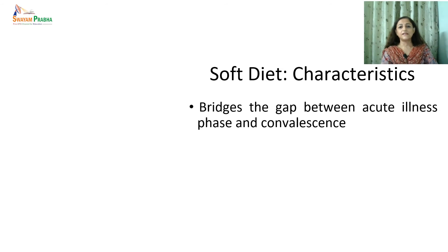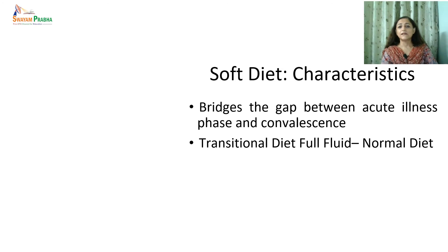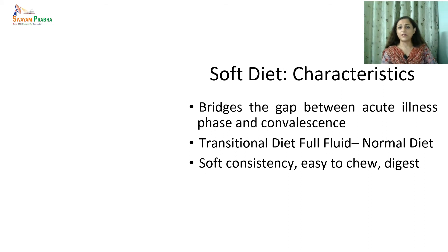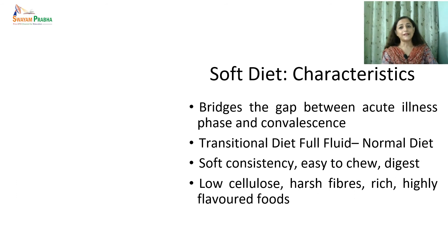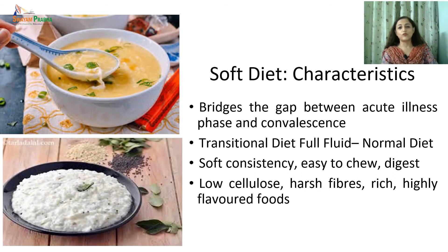After liquid diet, the second type is the soft diet — the most frequently used hospital diet. It is a transition diet that bridges the gap between the acute illness phase and convalescence, filling the gap between the fluid and normal diet. The soft diet provides soft, cold food that is lightly seasoned and moderately low in fiber. Foods have a soft texture and are easy to digest. Small volume meals are offered until the patient's tolerance to solid food is established.